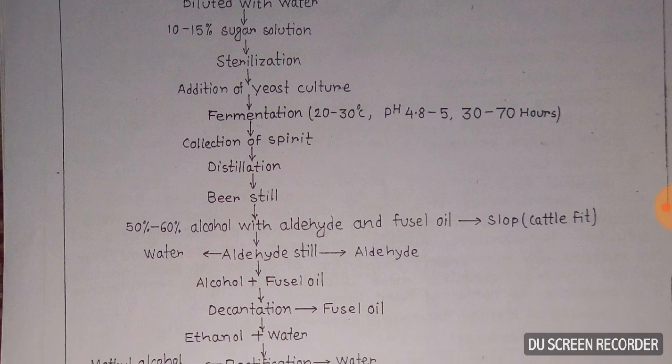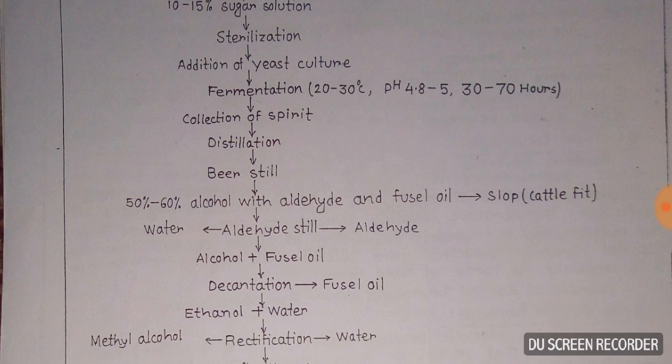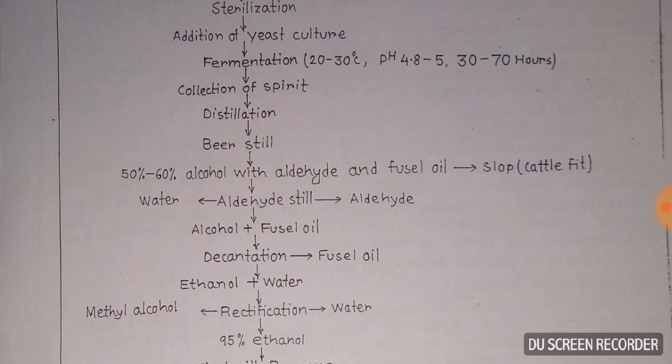The next step is fermentation, carried out at 20 to 30 degrees Celsius, at a pH of 4.8 to 5, for 30 to 70 hours. After fermentation, the spirit is collected and then distilled. The beer still produces 50 to 60 percent alcohol, along with aldehydes and fusel oil.